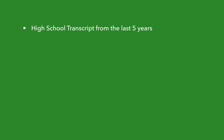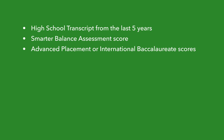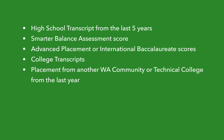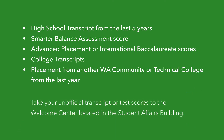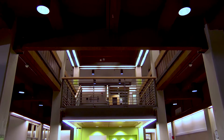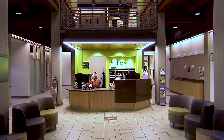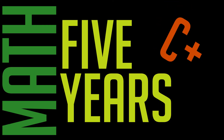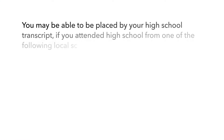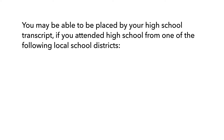Here are the other math placement options. If you have any of the following — a high school transcript from the last five years, Smarter Balanced assessment scores, advanced placement or international baccalaureate scores, college transcripts, or placement from another Washington community or technical college from the last year — then you will want to take your unofficial transcript or test scores to the Welcome Center to speak with a Getting Started Specialist. The Welcome Center is located in the Student Affairs Building. If you have taken a high school math class within the last five years, earned a C+ or higher, you may be able to be placed by your high school transcript if you attended high school from one of the following school districts.